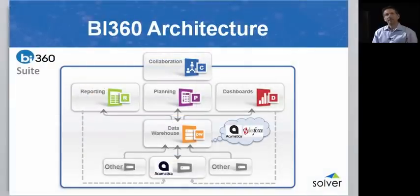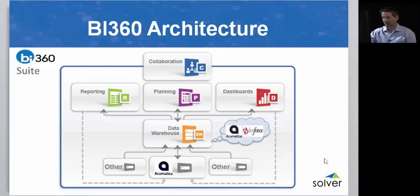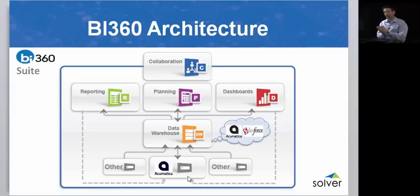Here we are in the BI360 architecture, which will give you a quick glimpse of how all of the components fit together. At the bottom of the screen you can see examples of different data sources, where Acumatica is a key data source as the ERP system. We have two types of integrations to Acumatica. The first one, shown with the dotted line, is where our report writer goes directly live into the Acumatica database, and the same with our dashboards — it's real time. That integration works any time you install BI360 together with Acumatica, for example in the private cloud or on-premises.